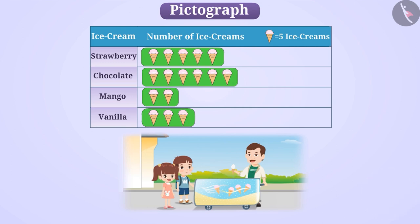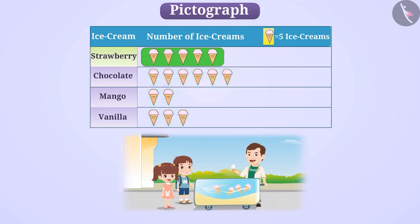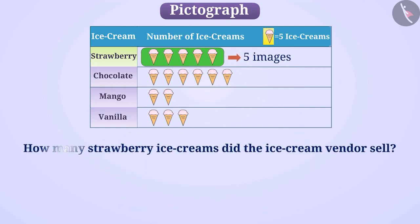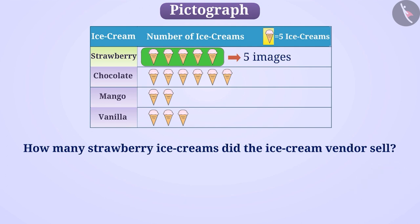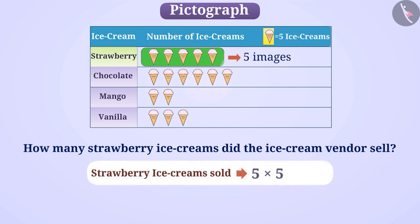We are given that this image represents five ice creams. Here, in the row of strawberry ice cream, five such images are drawn. How many strawberry ice creams did the ice cream vendor sell? He sold 5 multiplied by 5, which is equal to 25 strawberry ice creams.